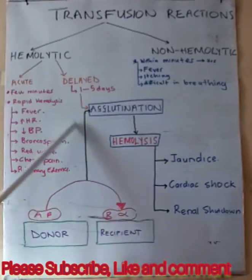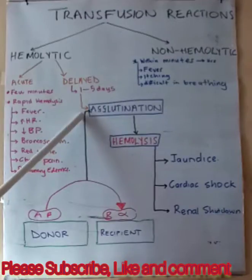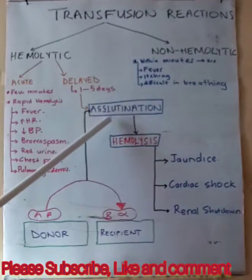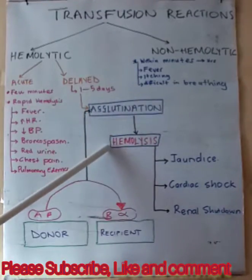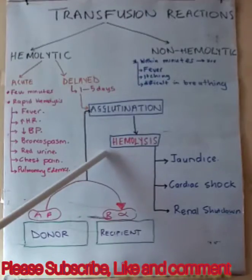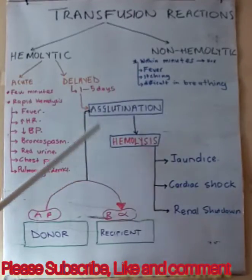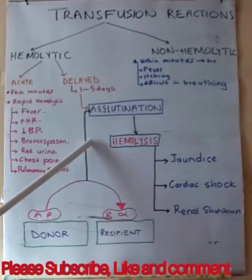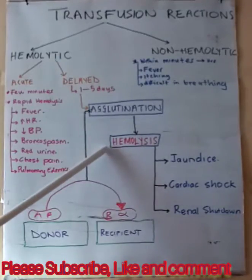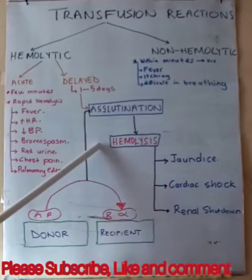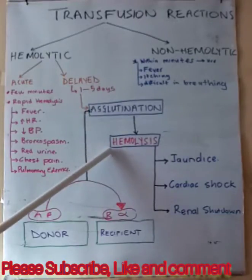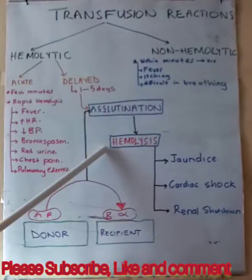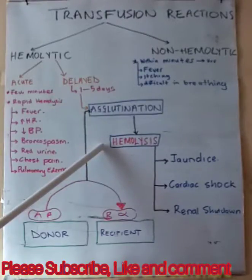First, there is going to be agglutination, and after agglutination there is going to be hemolysis. Hemolysis is simply the bursting of red blood cells. When red blood cells burst, hemoglobin is released, which gives heme and globin.